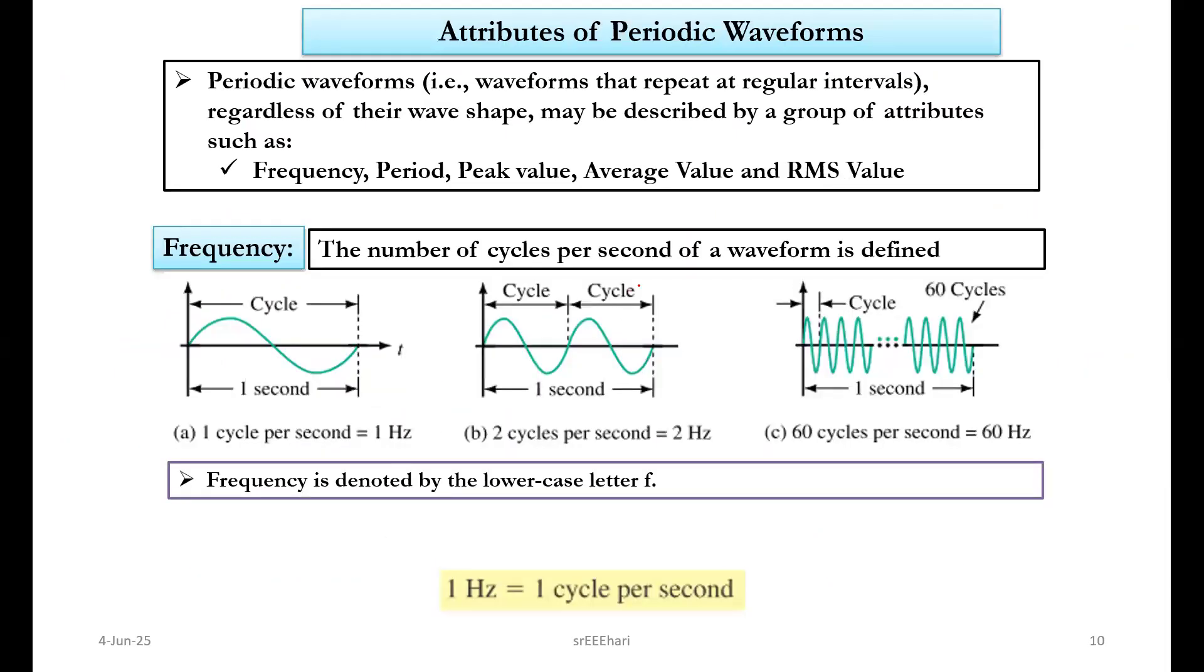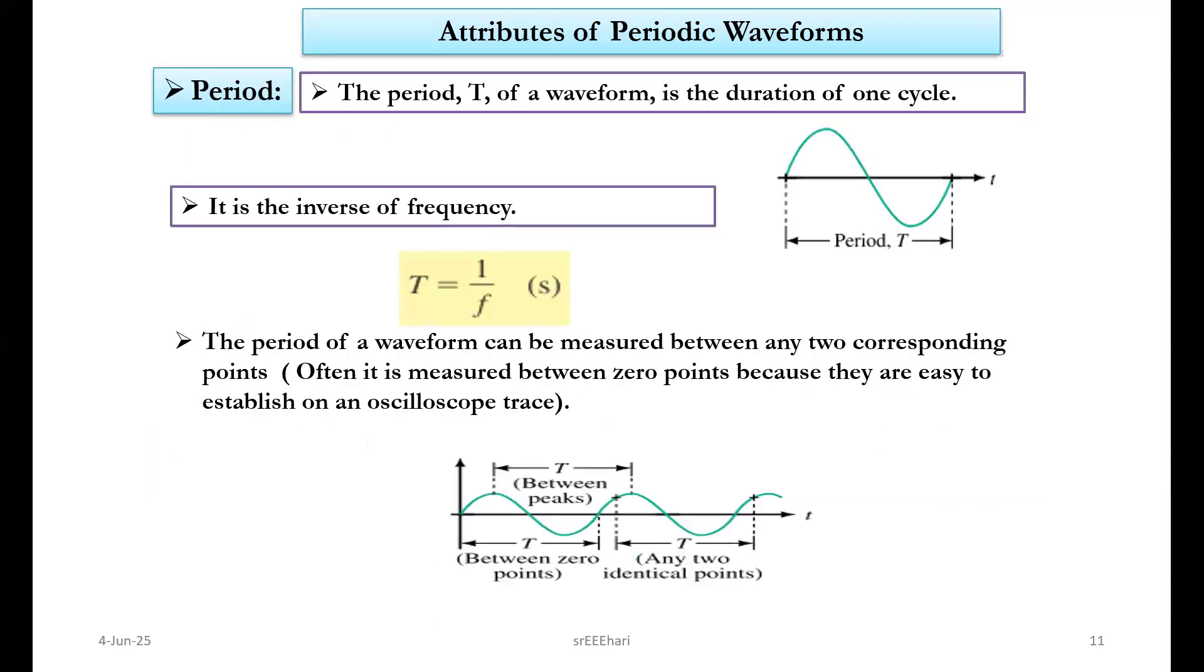Frequency is number of cycles per second, and the reciprocal of frequency will give us information of time period. In this particular waveform, one positive half and negative half will cover things that may be called time period. How many cycles will cover within a duration of one second may be called frequency.